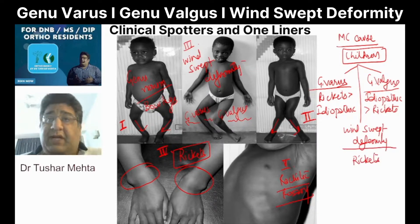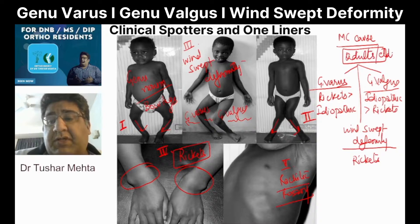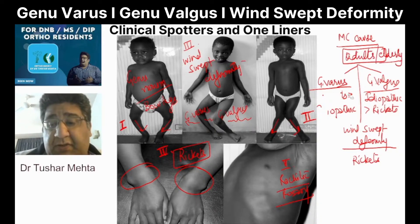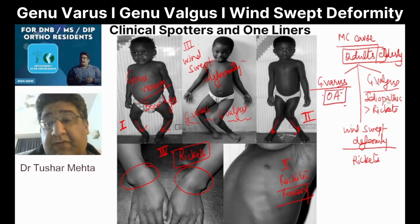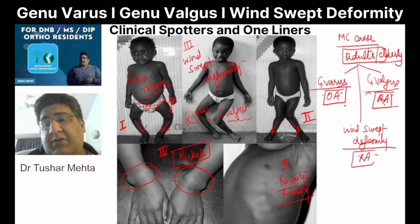This is one of the most frequently asked sets of three one-liner MCQs. One day they will alter it — rather than children, they will mention adults or elderly. For genu varum in adults or elderly, the most common cause is osteoarthritis. For genu valgus in adults or elderly, the most common cause is rheumatoid arthritis. For wind swept deformity in adults, again, it is rheumatoid arthritis.